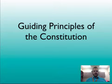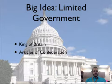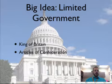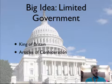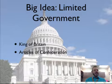The guiding principles of the Constitution are all guided by the big idea of limited government. Too much power — the kind we had under the King of Britain — leads to corruption. A government with too much power becomes corrupt and hurts the people. Conversely, the Articles of Confederation had too little power, which led to instability and chaos.